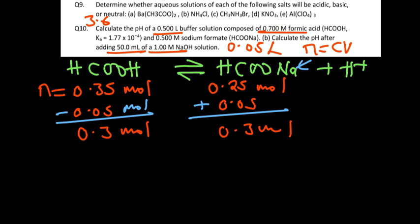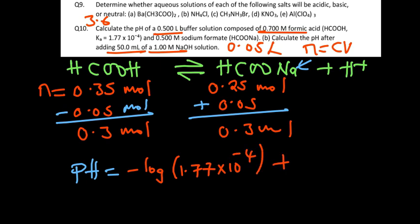After we've done this we can now go back to our equation of calculating the pH. So pH equals pKa, the pKa in this case is negative log of Ka, so negative log of 1.77 times 10 to the power negative 4 again, plus the log of the conjugate base 0.3 divided by 0.3 for the acid.